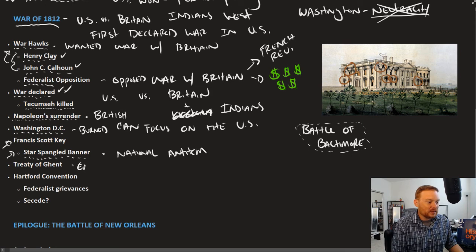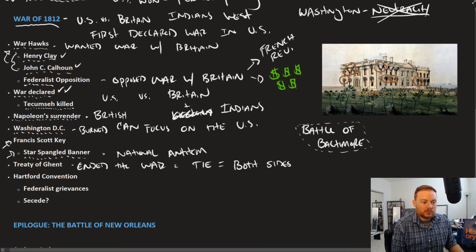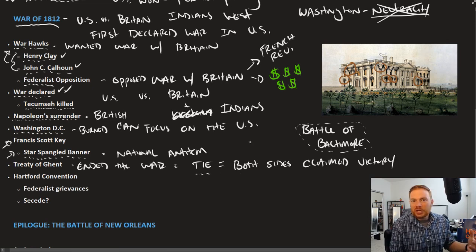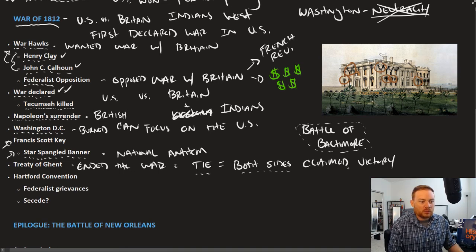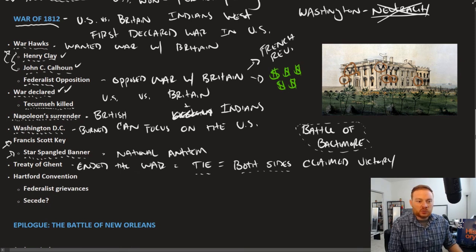The Treaty of Ghent ended the war. However, the war itself was more or less a tie, though both sides claimed victory. Not really a lot changed — borders stayed the same, and the war itself didn't have a dramatic shift or outcome for either side. Both sides claimed that they won. However, there are two very important consequences that come from this war.